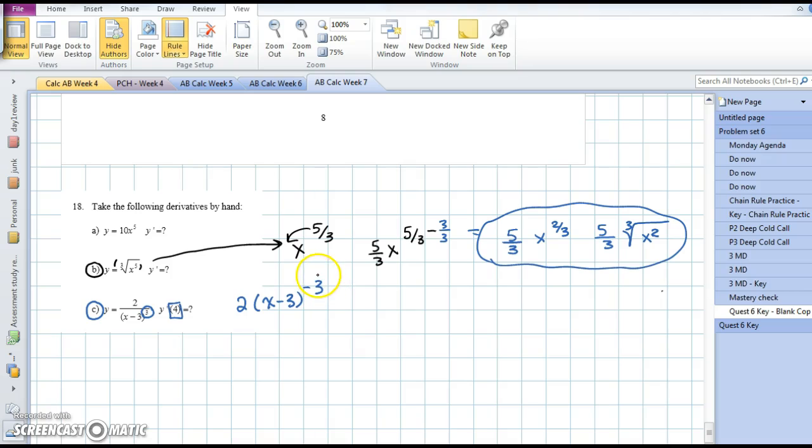Now we're looking at any power rule problem. Negative 3 comes down, and I have negative 3 times the original 2 times x minus 3 to the new power of negative 3 minus 1 more. That's the same as negative 6 times x minus 3 to the negative 4, but we could rewrite that as x minus 3 in the denominator to the positive power of 4.